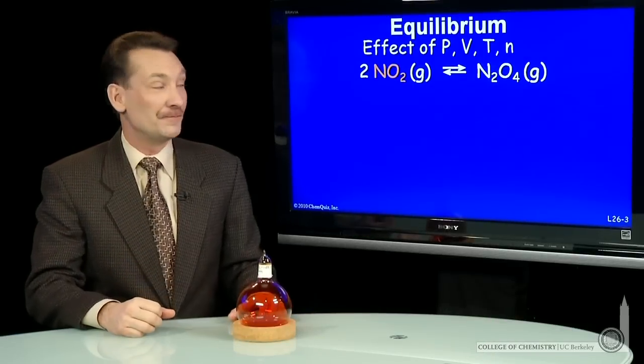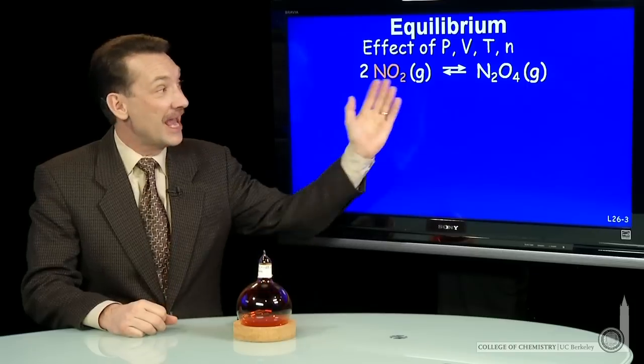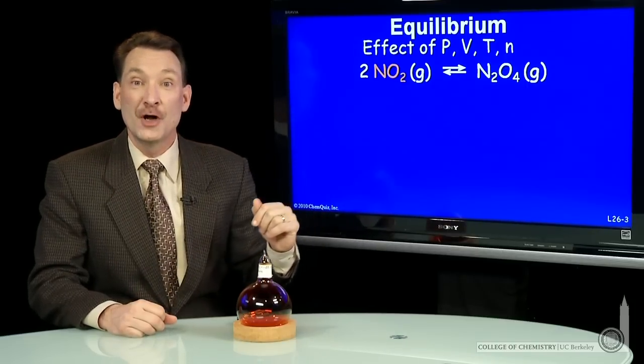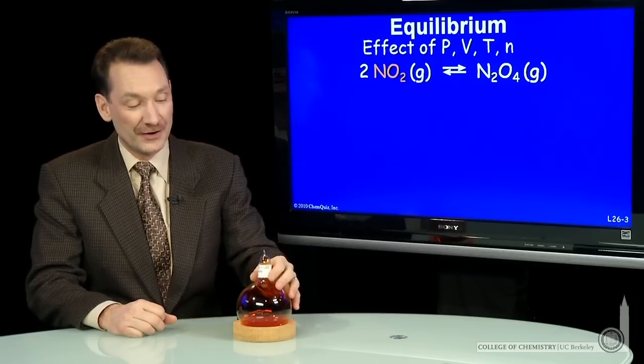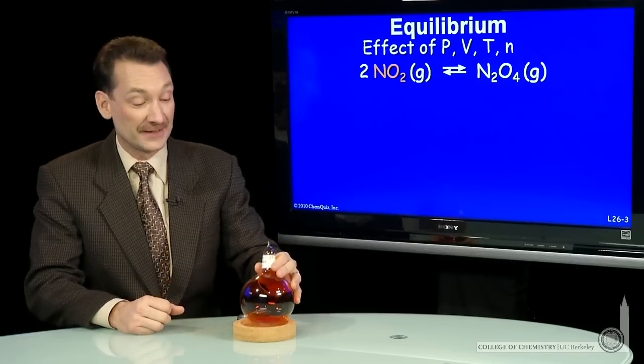Let's look at a gas phase equilibrium, the equilibrium between NO2, a brown gas, and N2O4, the dimer, which is a clear gas. They're in equilibrium here in this flask, and you can see the brown gas.